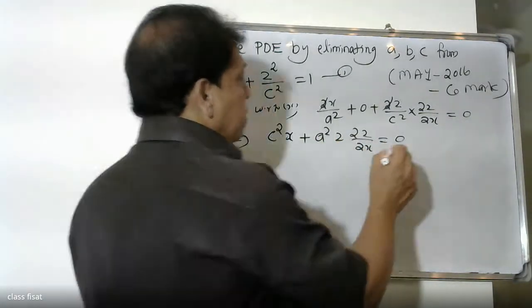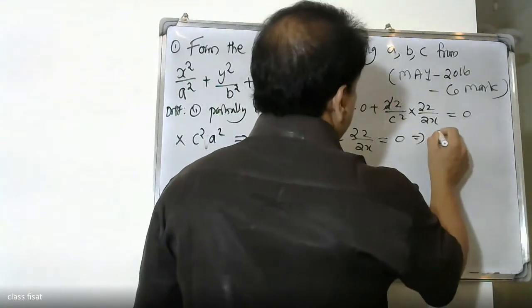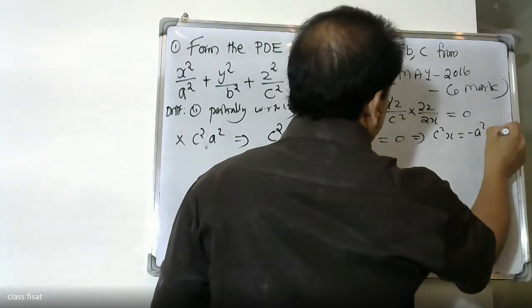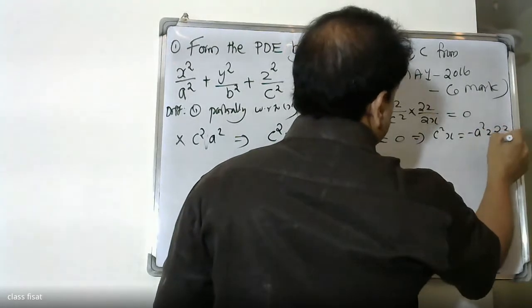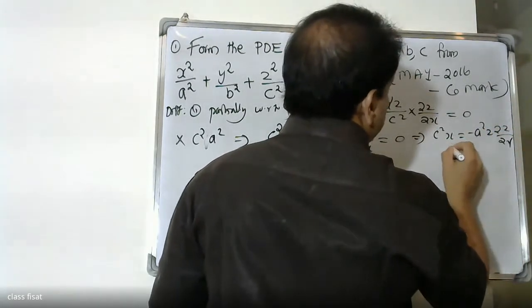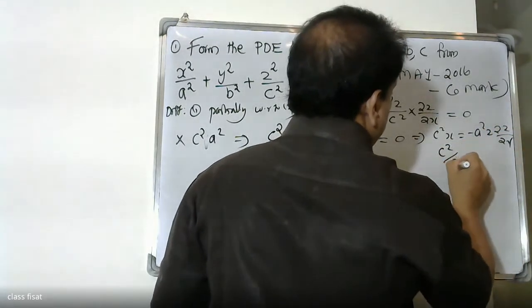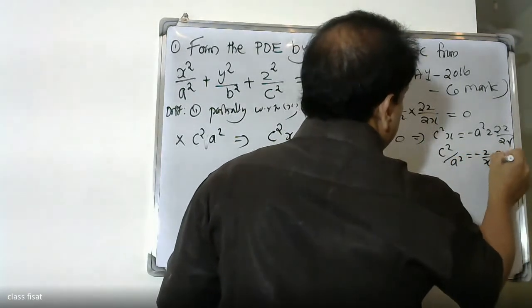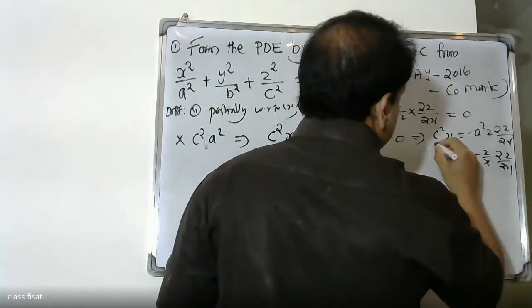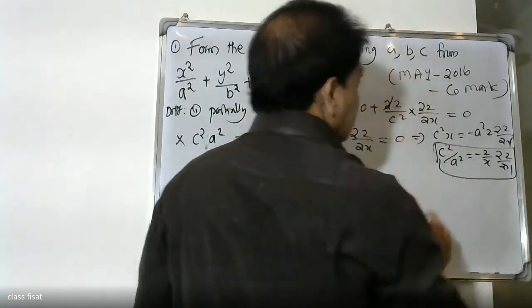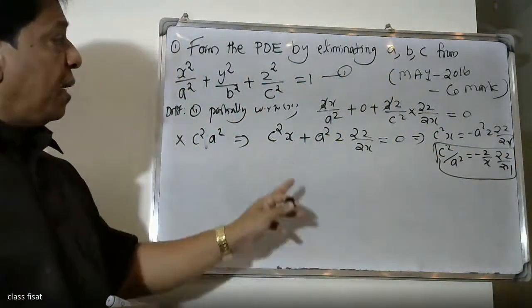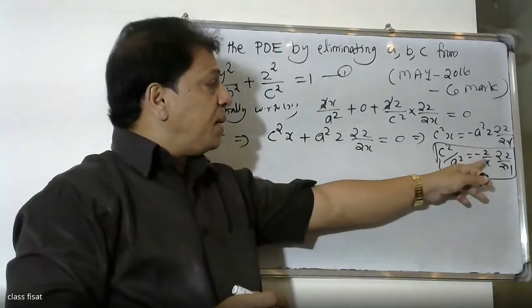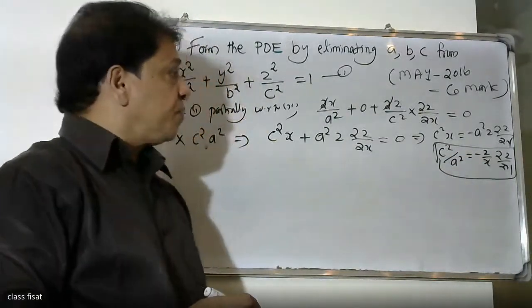Now we have: c squared times x equals minus a squared times dou z divided by dou x. Then: c squared by a squared equals minus z by x times dou z divided by dou x. That is, c squared by a squared equals minus z by x times dou z by dou x.